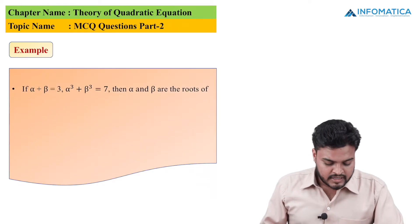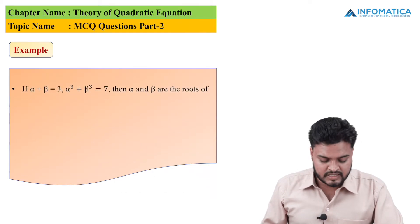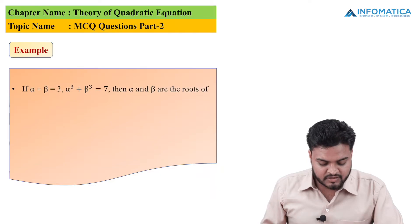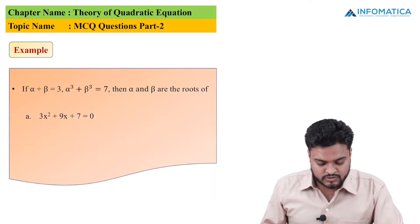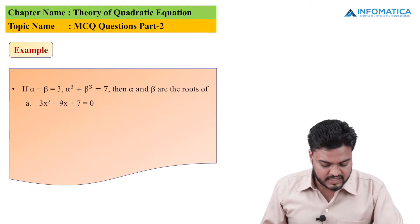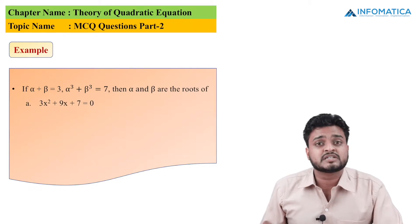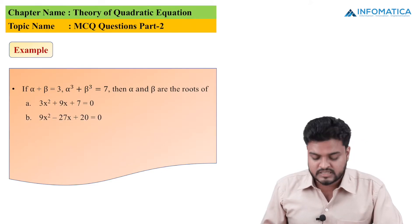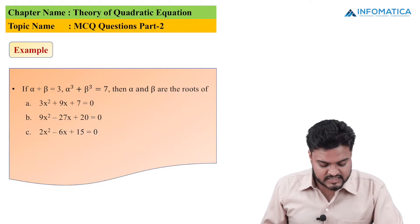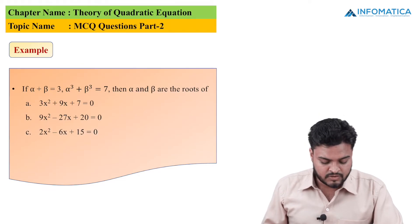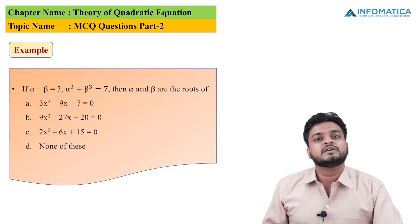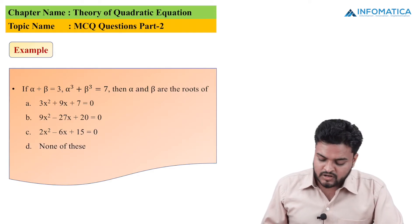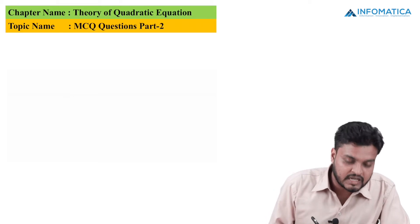Next question: If alpha + beta = 3 and alpha³ + beta³ = 7, then alpha and beta are roots of which equation? Options: (a) 3x² + 9x + 7 = 0; (b) 9x² - 27x + 20 = 0; (c) 2x² - 6x + 15 = 0; (d) none of the above.